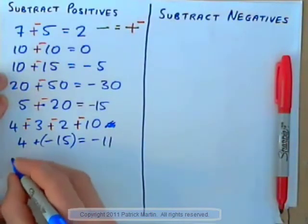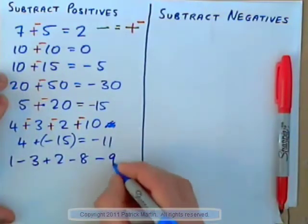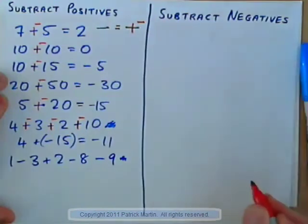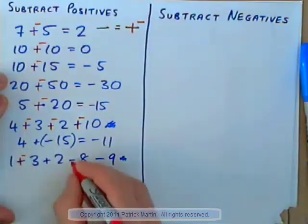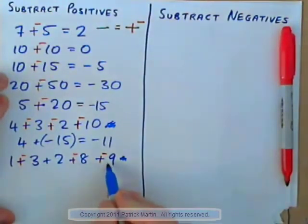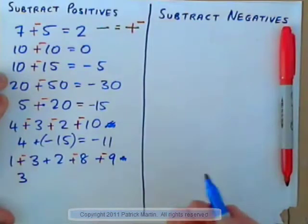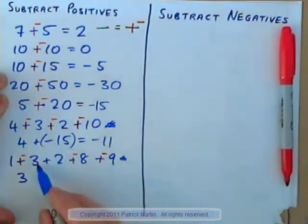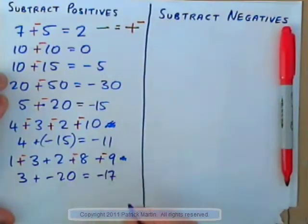What if you had positive 1 minus 3 plus 2 minus 8 minus 9? Subtracting can be changed to adding the opposite. Change each subtraction sign to plus negative. Now it says: a positive 1, negative 3, positive 2, negative 8, and negative 9. Put the positives together: 1 and 2 makes positive 3. Put the negatives together: negative 3 plus negative 8 plus negative 9 is negative 20. So that's 3 positives and 20 negatives — negative 17.